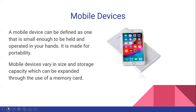The next type of computer is mobile devices. A mobile device can be defined as one that is small enough to be held and operated in your hands — it is made for portability. The Samsung Galaxy S20, released in March 2020, uses the Snapdragon 865, which has a processing speed of up to 2.8 GHz. Mobile devices vary in size and storage capacity, but the storage capacity can be expanded by using a memory card.